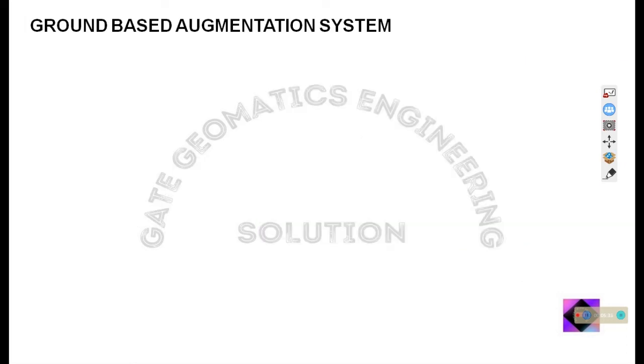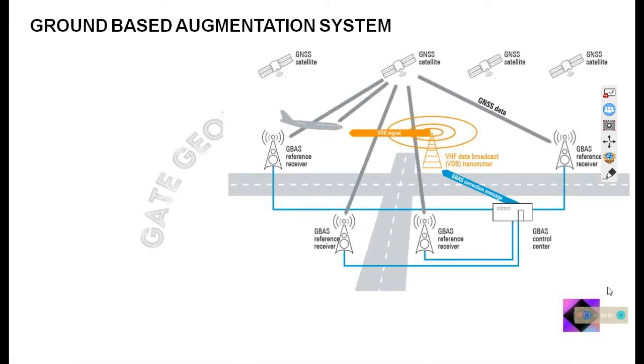Now let us move to the ground based augmentation system. This ground based augmentation system is mostly the same as the satellite based augmentation system. The only difference is that in place of a geostationary satellite, a very high frequency or VHF tower is used to transmit the error information. In the G-BAS architecture, you can see there is a VHF tower used to broadcast the error information. G-BAS is also known as the local area augmentation system because its coverage area is very small.